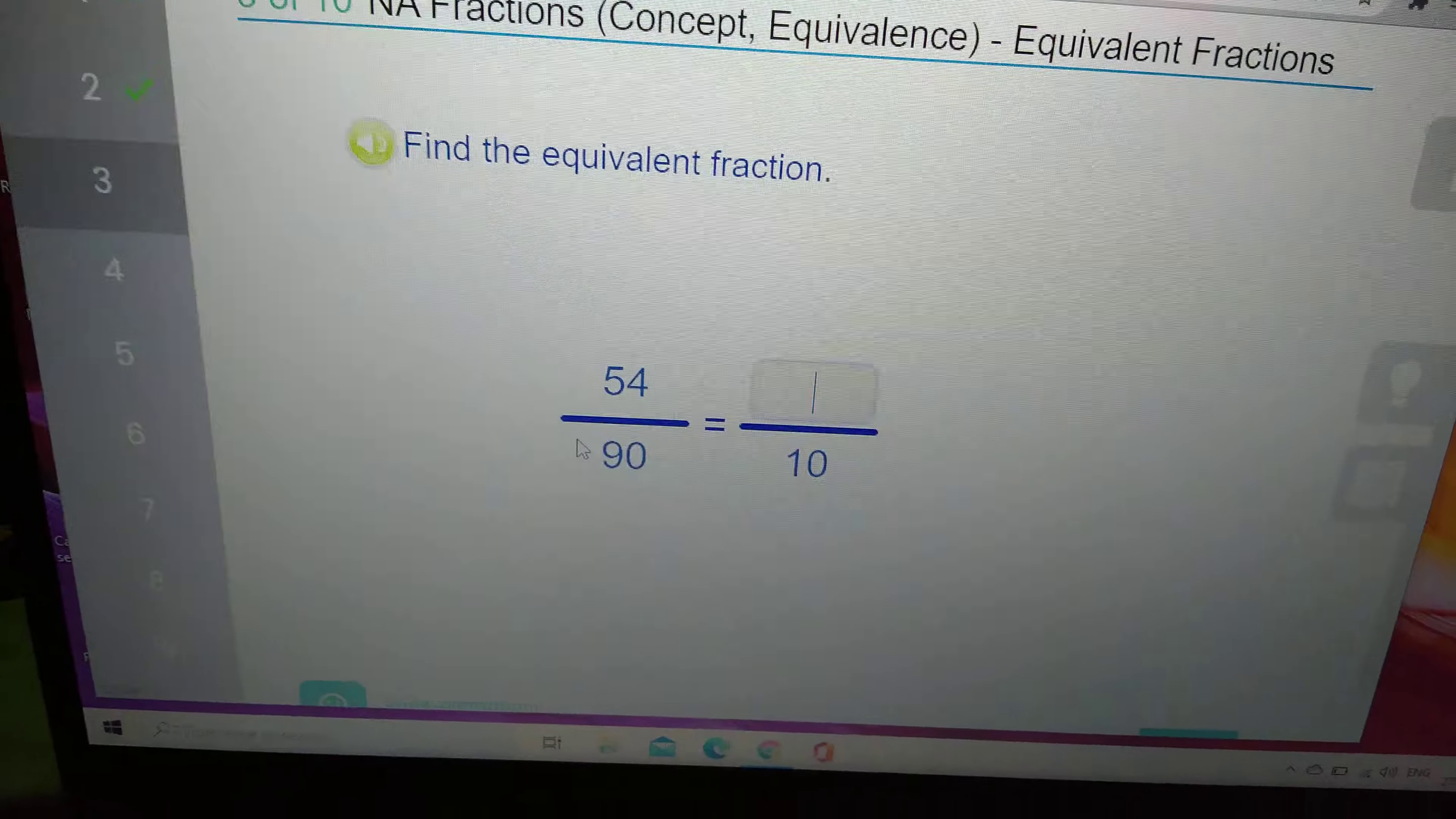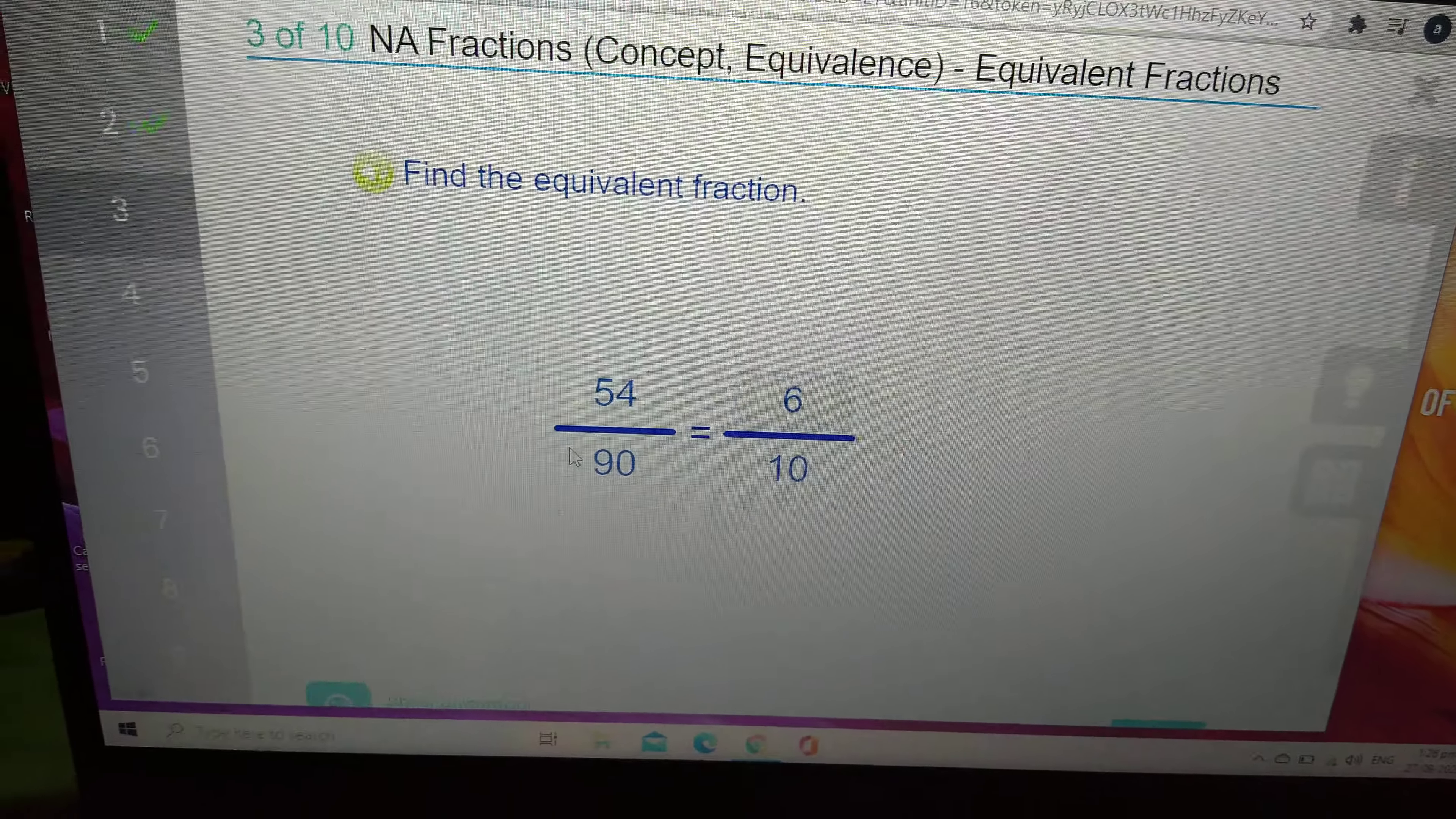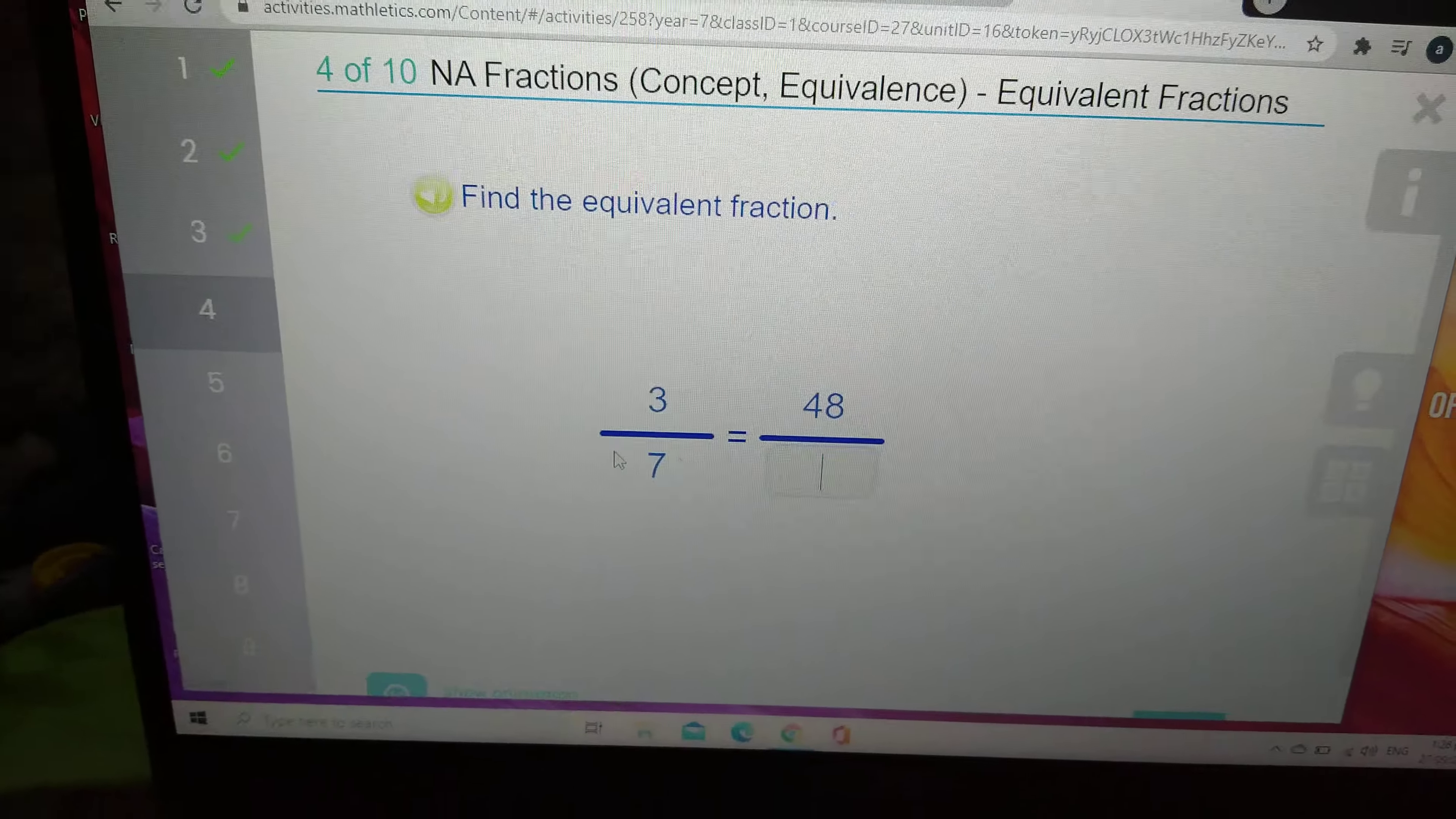54 over 90 equals 6 over 10. Very good, you're doing mental math. Of course I am. I'm a great mental master. A master.